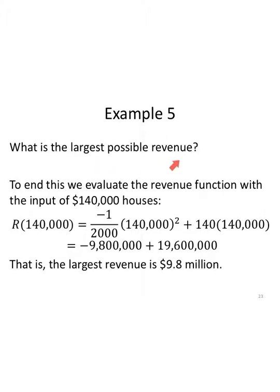What is this largest possible revenue? To end this example, we evaluate the revenue function with the input of 140,000. So my revenue is negative one over 2000 times price squared plus 140 times price. My price we found to be 140,000. And when you do a vertex of a parabola and you do the simplification by hand and you find this ax squared part and you find this bx part, as you're doing the arithmetic, it'll always be that the first part, the ax squared, will simplify to be exactly half of bx and they'll have opposite signs. If that happens, you know you found your vertex correctly. In this case, negative 9,800,000 plus 19,600,000 gives me a largest revenue, the y value of the vertex of my revenue function at 9.8 million dollars.